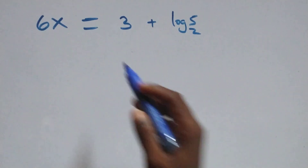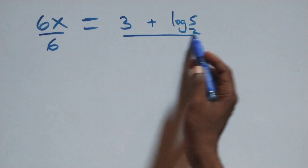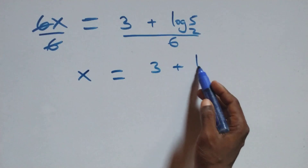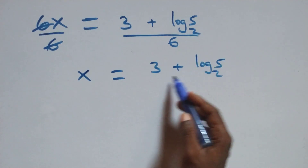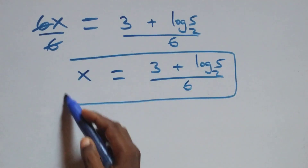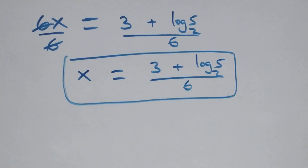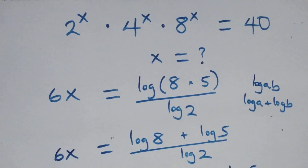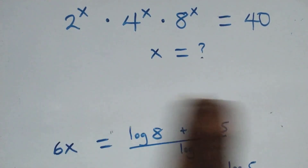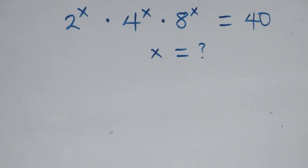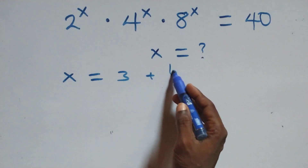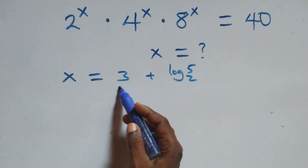Now we divide both sides by 6. The 6s cancel each other, and we have x equals 3 plus log 5 base 2, all over 6. This is the value of x for this given problem. Now let's check if it satisfies the original equation by substituting x equals 3 plus log 5 base 2 all over 6.